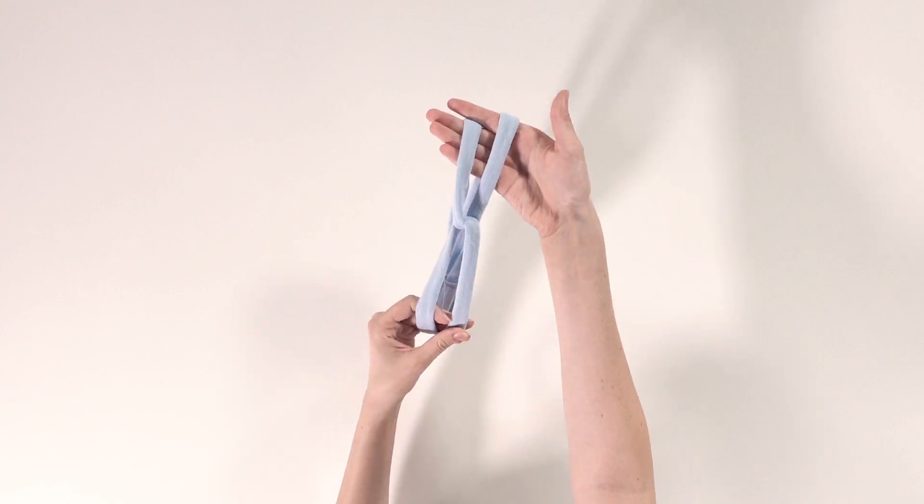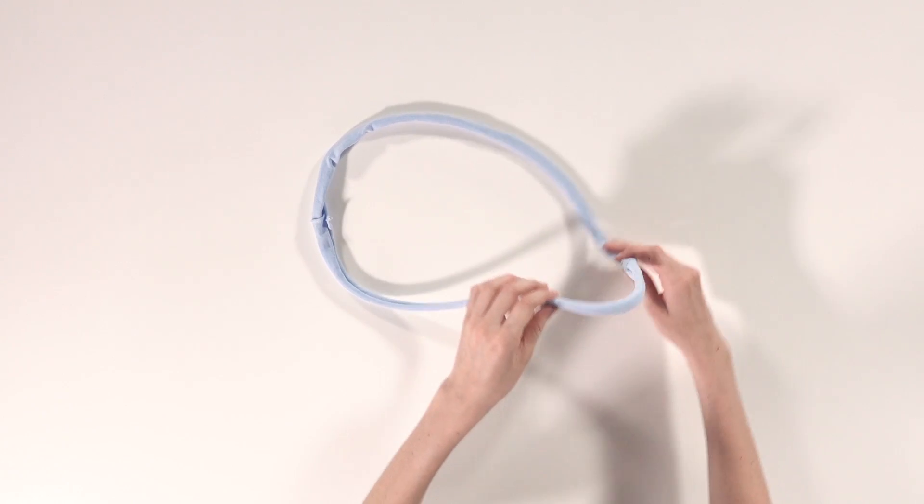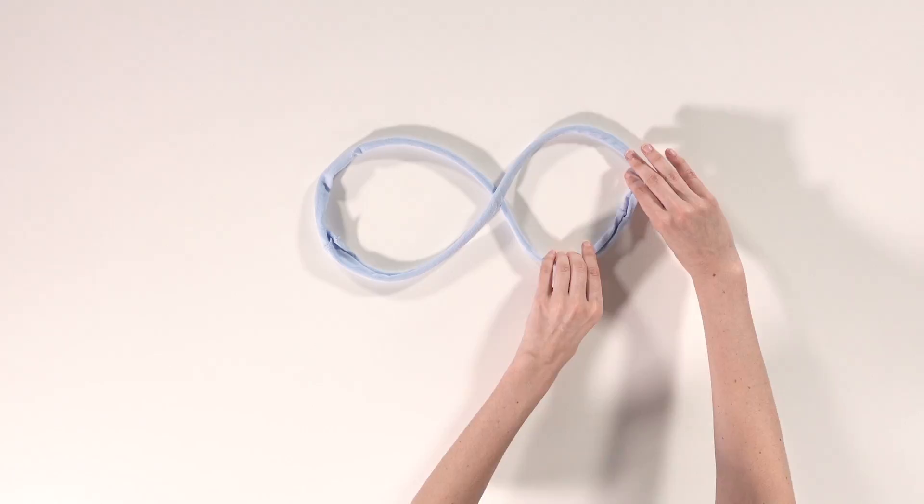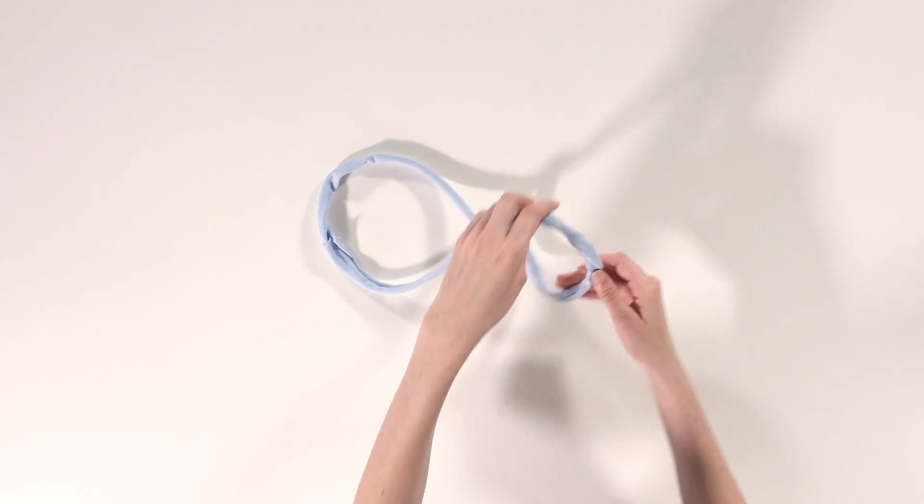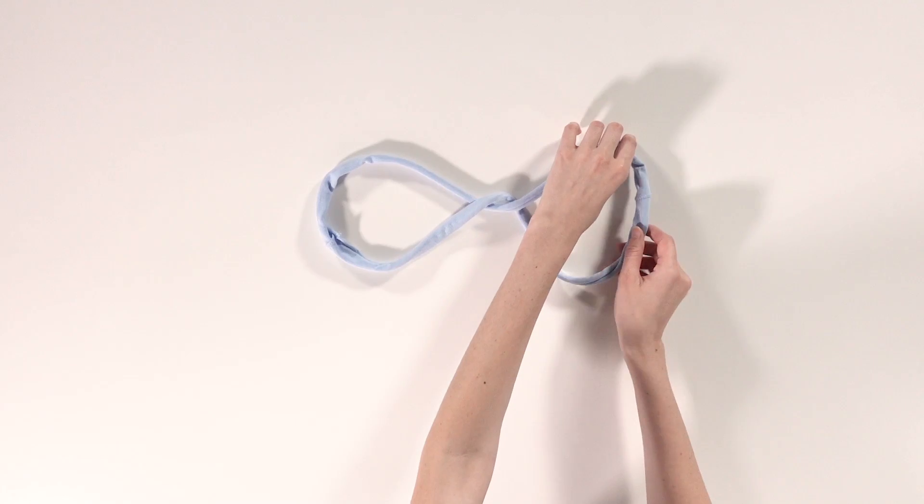Let's see that once more in slow motion. Fold your fabric loop in a figure eight. Then fold it over again like so. And that's it. Thank you so much for watching.